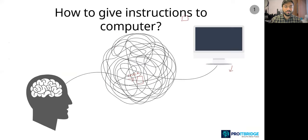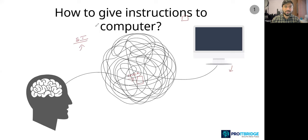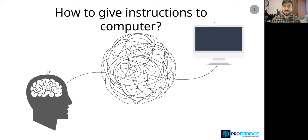We need to write a program — a set of instructions. So how are we going to give those instructions to a computer? We'll talk about how programming evolved, step by step. We will not just jump into Python, because without understanding our history, we won't be able to move to our future. As humans, we need to communicate with computers — just like two humans communicate with each other using language.